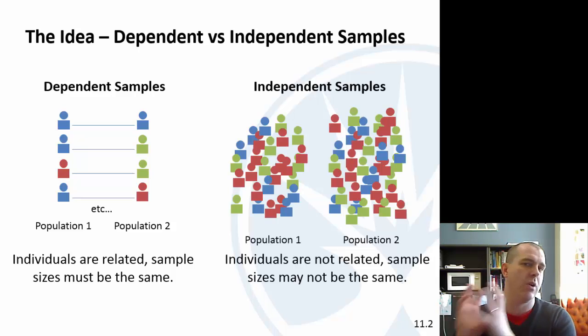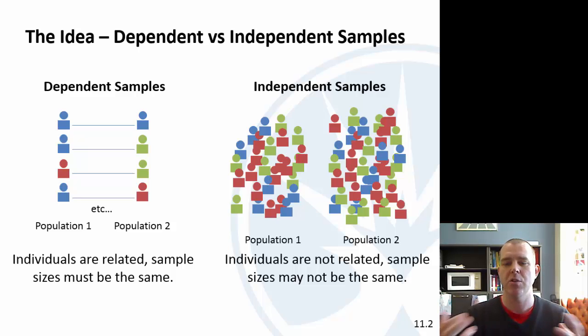Independent samples is just one random sample over here, one random sample over here. We do a drug test, so we get one group the placebo, the other group the drug, and then we compare the average responses there. We have two different populations, don't have to be the same sample size, so we would just compare the means.